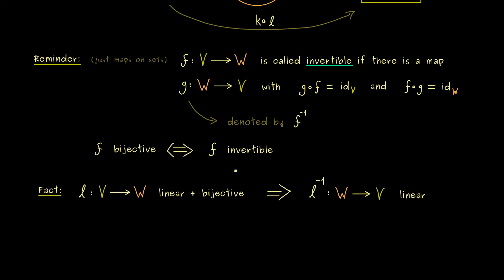So we see, if a map conserves the linear structure, the vector space structure in one way, it also conserves it in the other way.